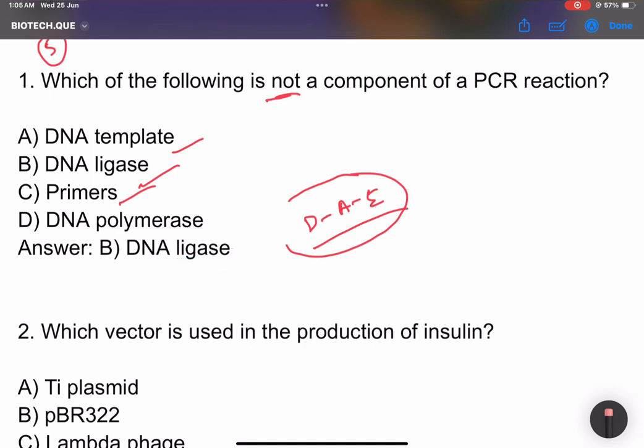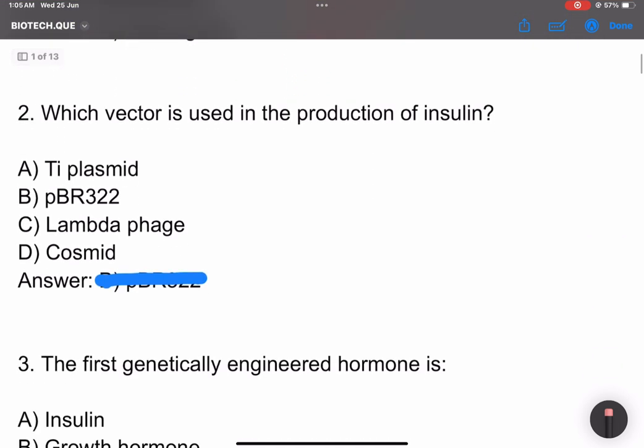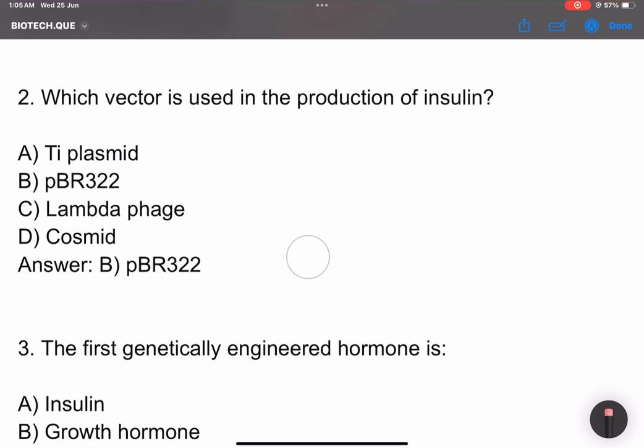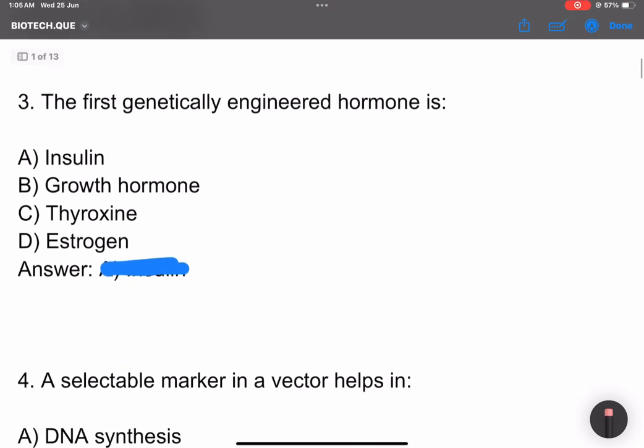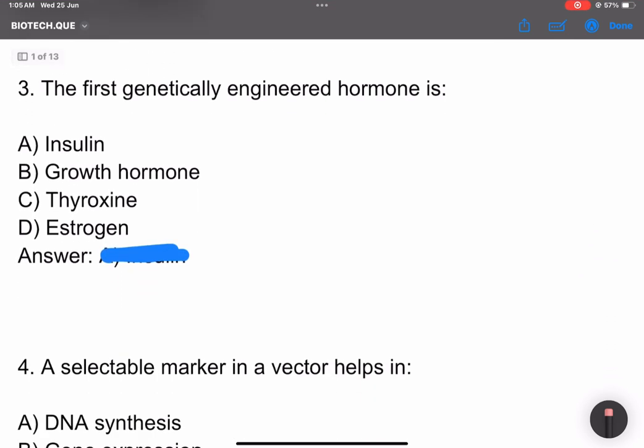Question 2: Which vector is used in the production of insulin? Options include Ti plasmid, pBR322, Lambda phage, and Cosmid. Now I can just remind you to practice for the exam.